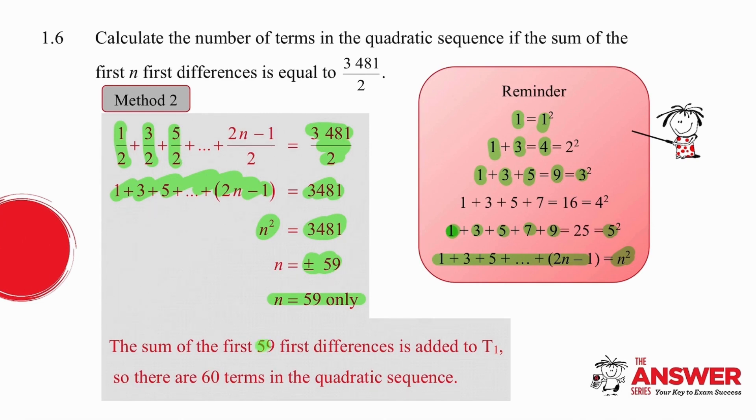When we know that there are 59 first differences, we don't have the answer. We know that those 59 first differences will be added to the first term to find the next term in the pattern. So there are in fact 60 terms in this quadratic pattern. You really need to process the relationship between the first differences and the number of terms in a pattern in order to answer some of the questions that relate the quadratic pattern to its first differences.